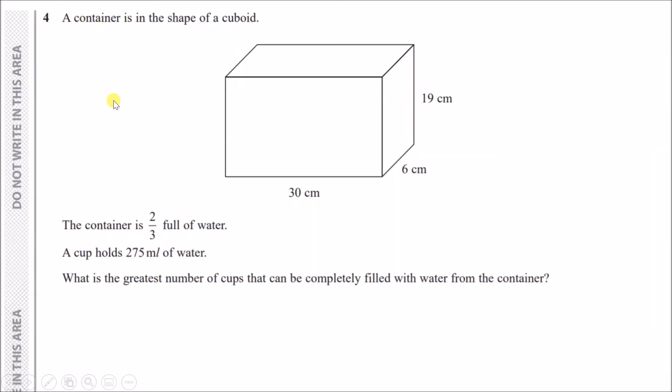A container is in the shape of a cuboid, two-thirds full of water. A cup holds 275 milliliters of water. What is the greatest number of cups that can be completely filled from the container? To figure out the volume of this container, multiply these three values: 30 times 6 times 19 equals 3420. This is literally the same as 3420 milliliters because centimeter cubed and milliliters are equivalent units. The container is two-thirds full, so two-thirds of 3420 gives us 2280 milliliters.